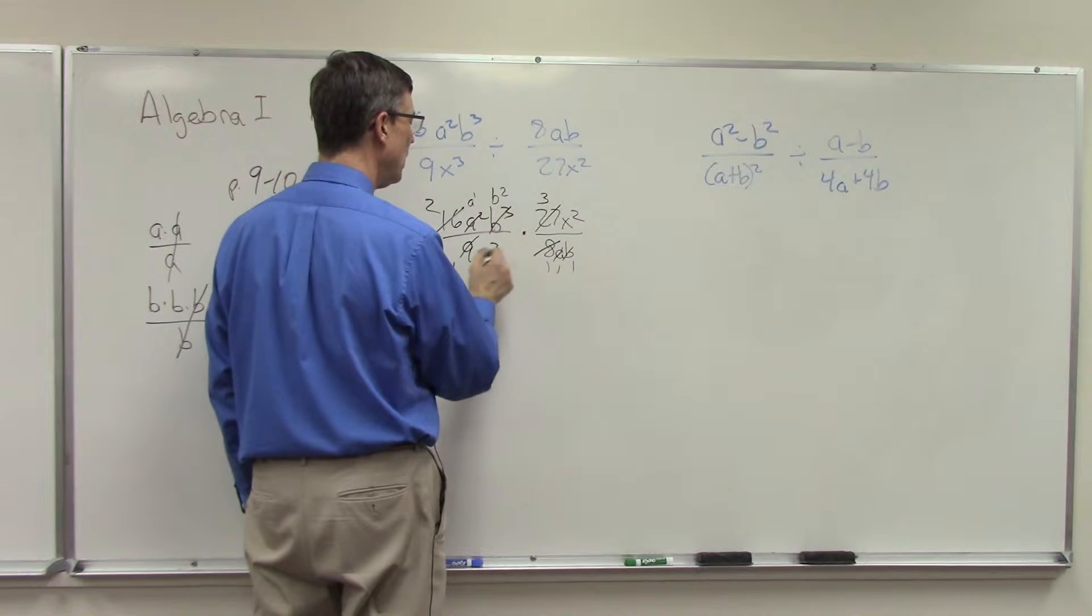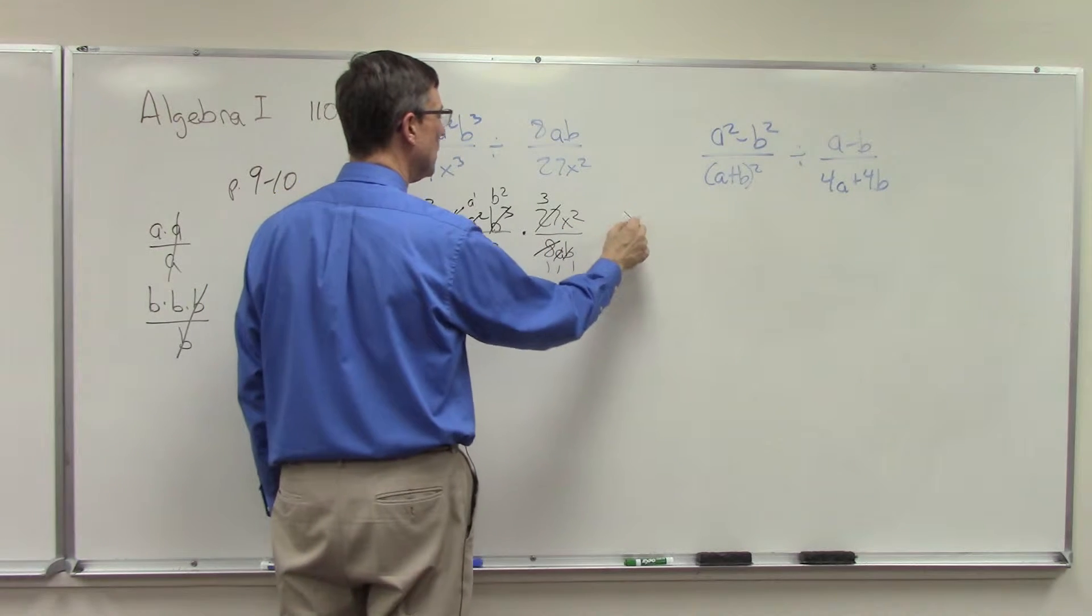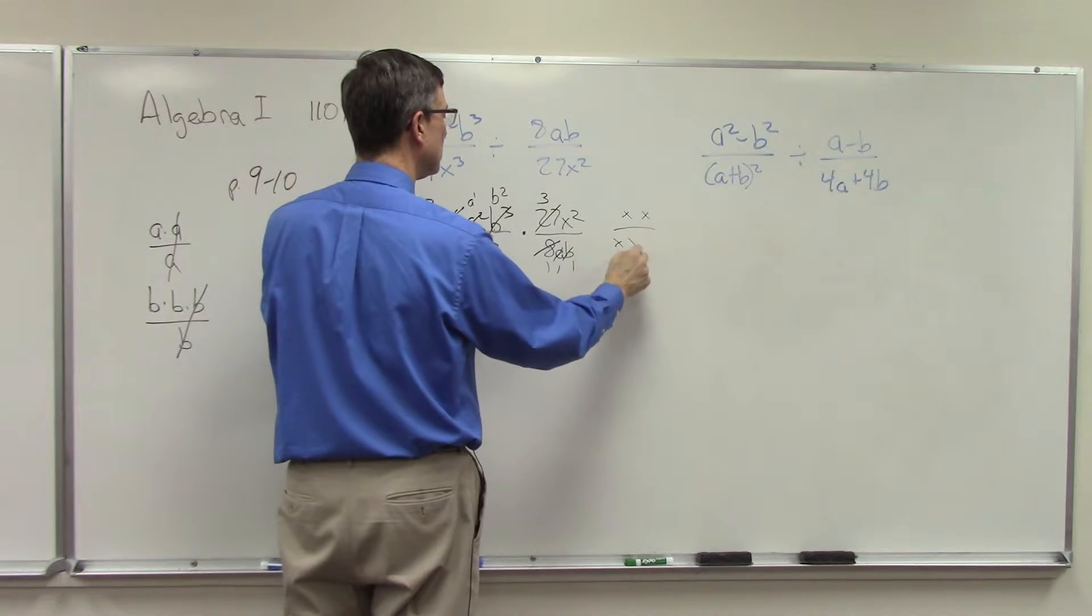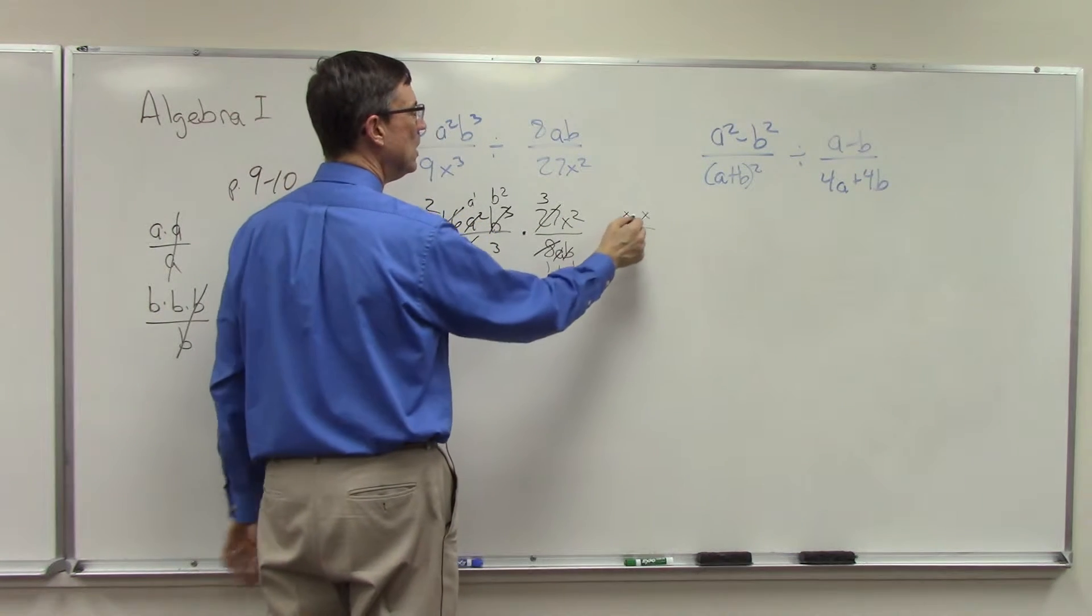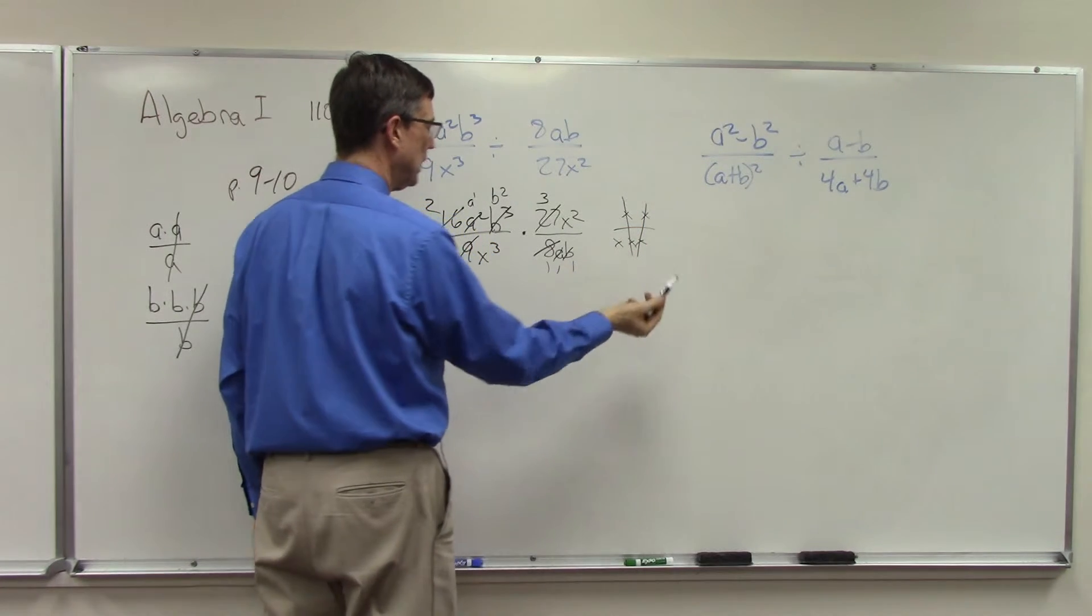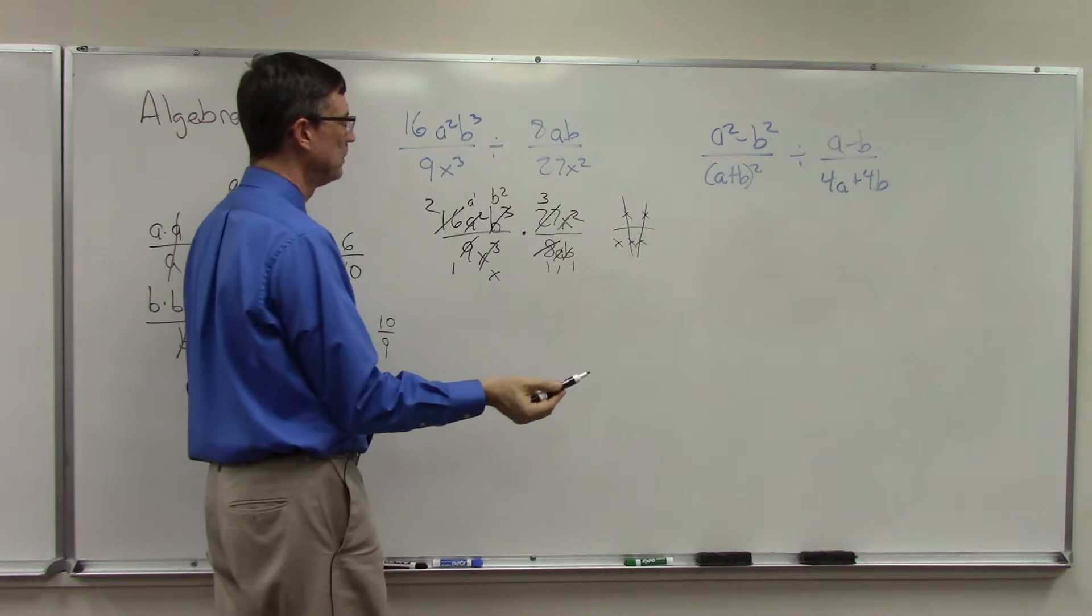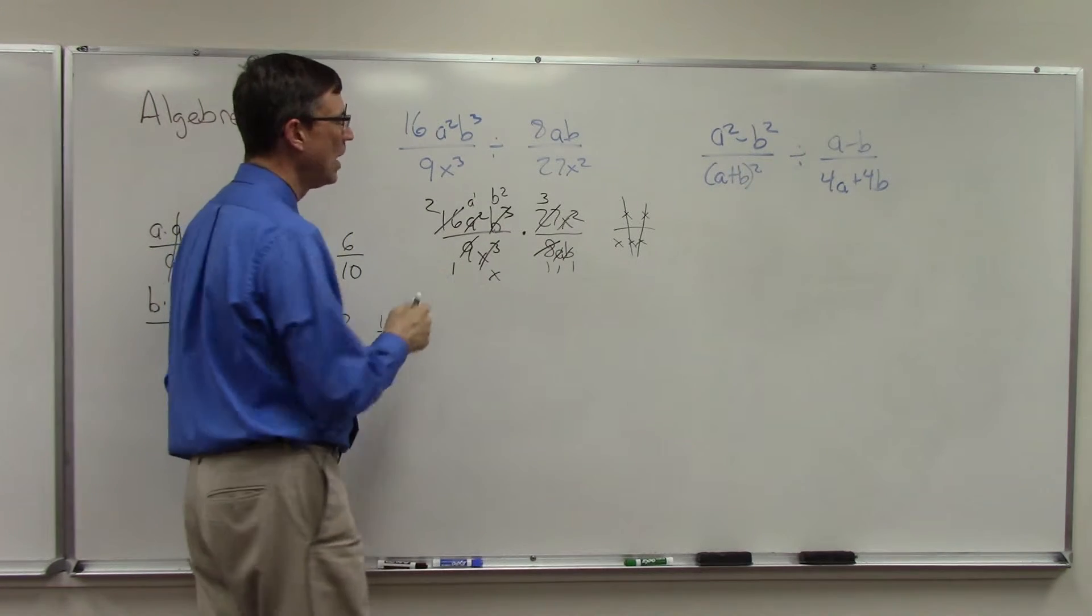Let's do the same with the x's. Now I have more x's on the bottom, so I have two x's on the top—x²—and down here I have three x's. So this one cancels this one, this one cancels this one, and I have one x down here, and that one's completely gone.